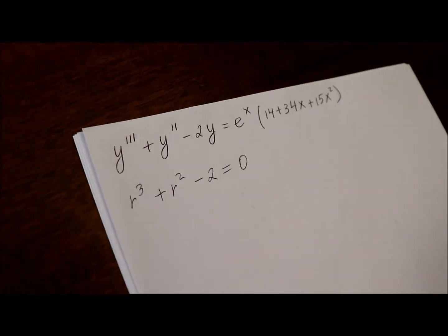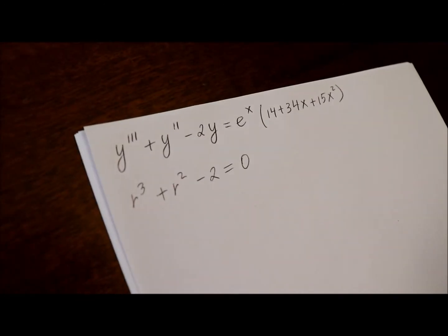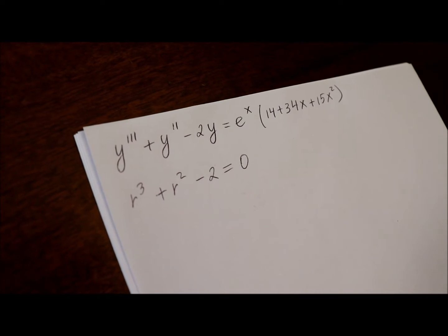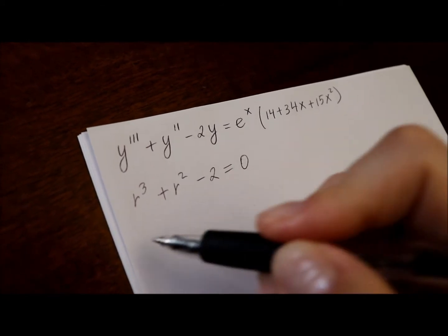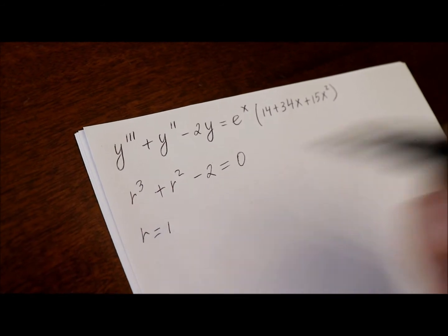You can either graph this function and find the r-intercepts, or sometimes if a function is easy enough, you can just guess a solution. For instance here, we can just guess that there is a solution r equals 1.